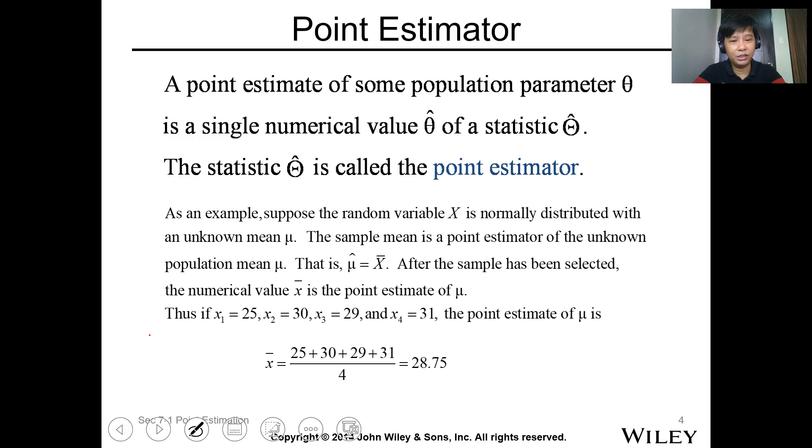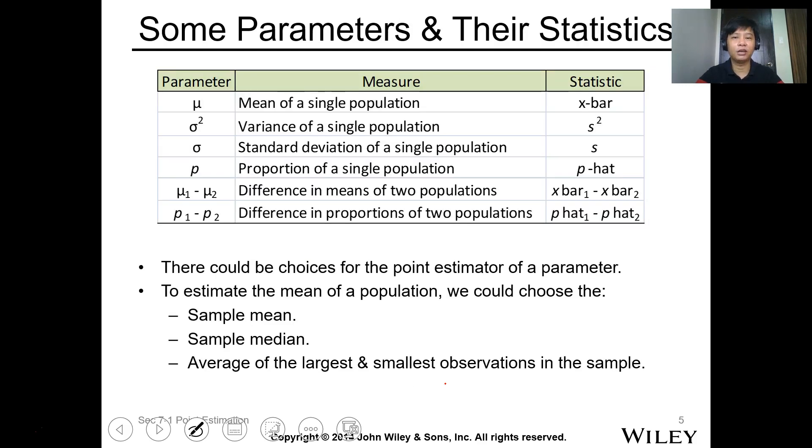After the sample has been selected, the numerical value x bar is the point estimate of your mean. Thus, if we have the following data for the four samples, we get the average of this, the average, which is x bar, and this is the estimate of the mean of the population, or the statistics average.